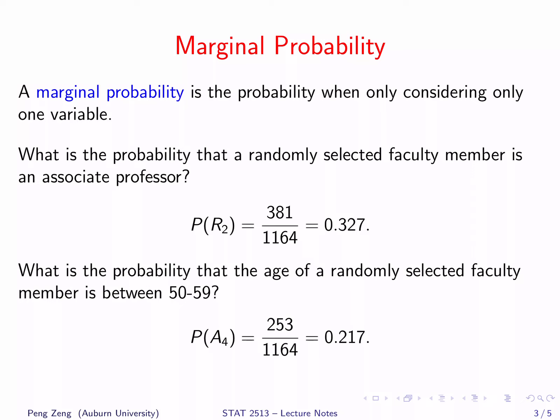Let's consider another example. What is the probability that the age of a randomly selected faculty member is between 50 to 59? In this question, we only need to consider one variable: age. The last column of the contingency table lists the frequencies of faculty members in their 50s. The event here is A4, which has 253 faculty members. The total number of faculty members is 1164. Therefore, the probability is 253 over 1164, which is 0.217.